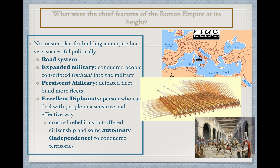First, Rome had an incredibly successful road system, which I'll detail in a minute. Connecting your empire through transportation systems leads to political success. In addition, when Rome expanded and conquered new peoples, those conquered peoples would be conscripted — meaning enlisted — into the military. In this way, the Roman Empire ensured loyalty and built a massive military. A new territory isn't necessarily a burden if those people can be used to defend it. The military was also particularly persistent — if they suffered a defeated fleet of ships, rather than retreating, Rome simply built more ships. This aggressive, offensive military ensured quick and rapid expansion.